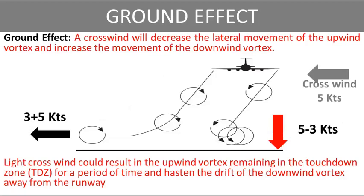A crosswind will decrease the lateral movement of the upwind vortex and increase the movement of the downwind vortex. A light crosswind could result in the upwind vortex remaining in the touchdown zone for a period of time, affecting the next movement on the same runway. A light crosswind could also result in fast drift of the downwind vortex away from the runway, but in this case it can affect parallel runway operations.